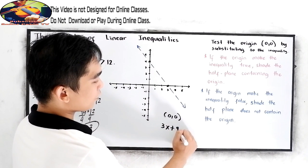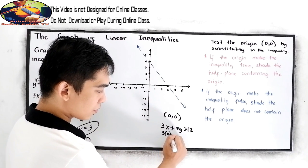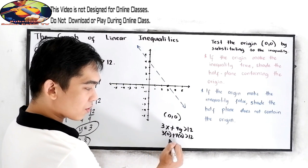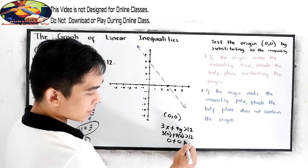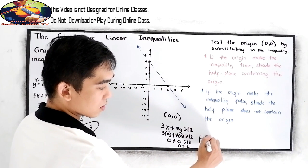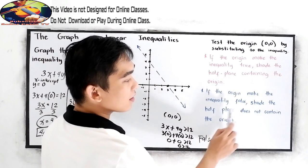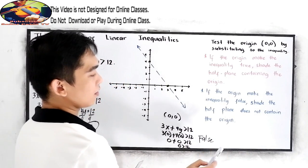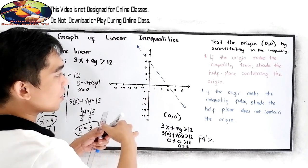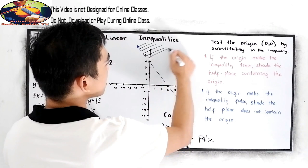So we need to test our linear inequality at the origin (0, 0): 3x plus 4y greater than 12 becomes 3 times 0 plus 4 times 0 greater than 12. That gives us 0 plus 0, which is 0 greater than 12. Is 0 greater than 12? This is false. Since false, if the origin makes the inequality false, shade the half plane that does not contain the origin. So we will not include the origin — we shade this part. So our graph will be this one.